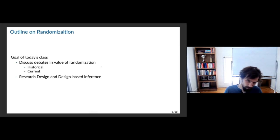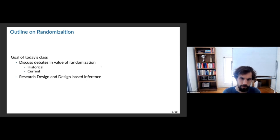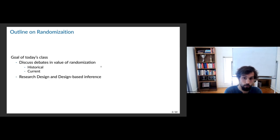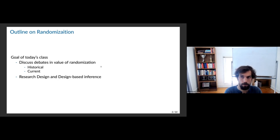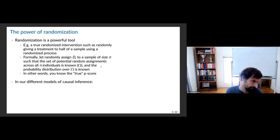We'll cover two parts: first, debates around the value of randomization both historically and currently, going back into the past a little bit and also discussing some more recent kerfuffles on this topic. Then we'll talk about the idea of a research design and the concept of design-based inference, which is something less familiar — not typically taught in econometrics or statistics courses. I'll lay the groundwork for it, as it will be really useful going forward.